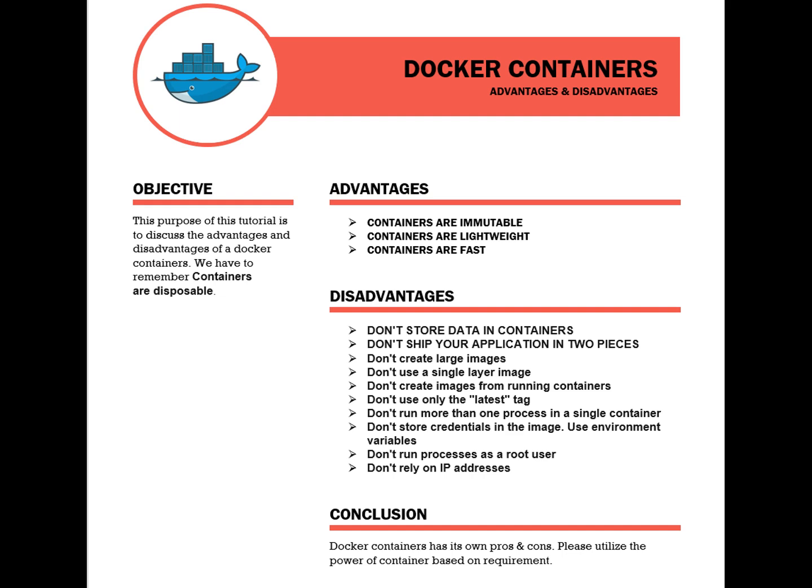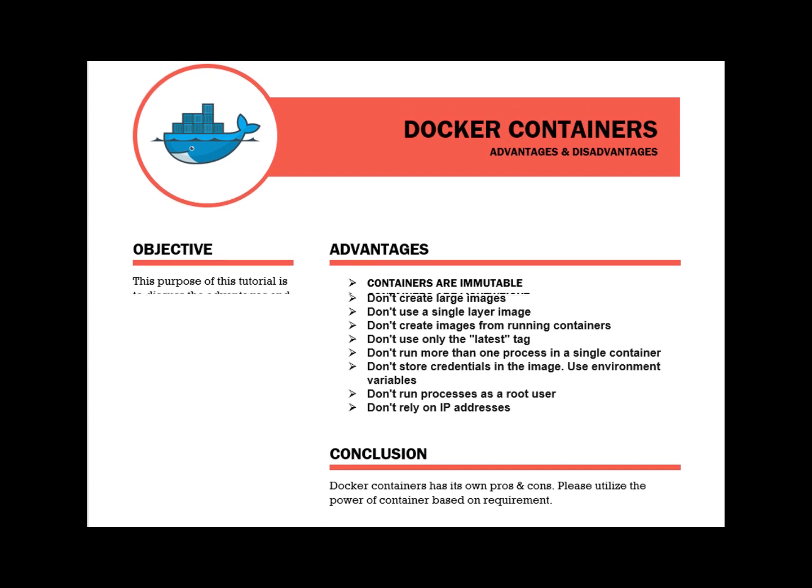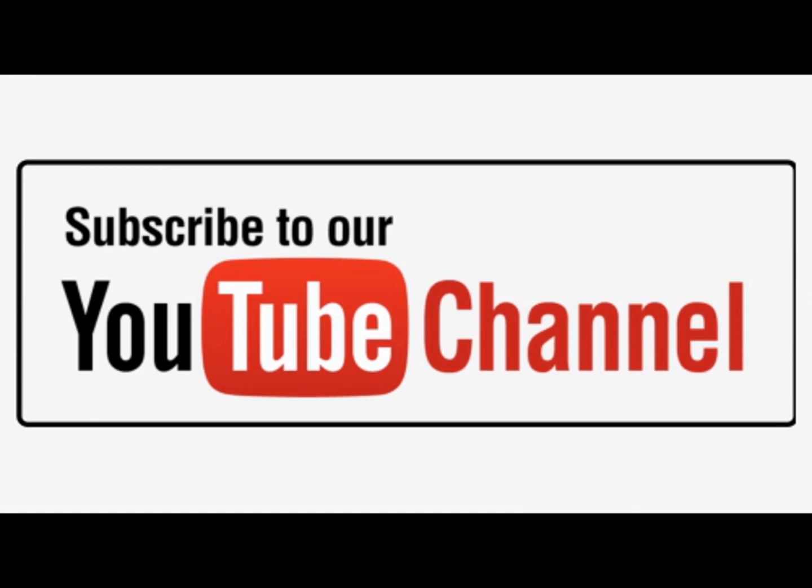Number ten: don't rely on IP addresses. Each container has its own internal IP address, and it could change if you start and stop the container. If your application or microservice needs to communicate with another container, use environment variables to pass the proper hostname and port from one container to another. Hope you understand these things and will apply them during your design. Thanks a lot, have a nice day!